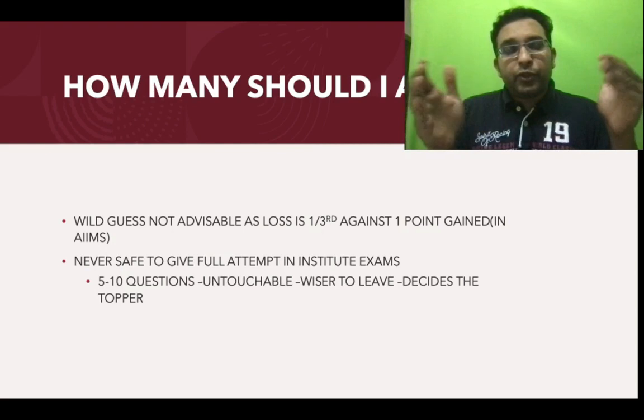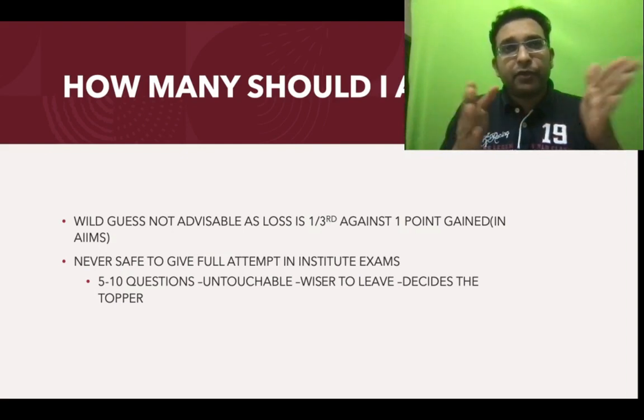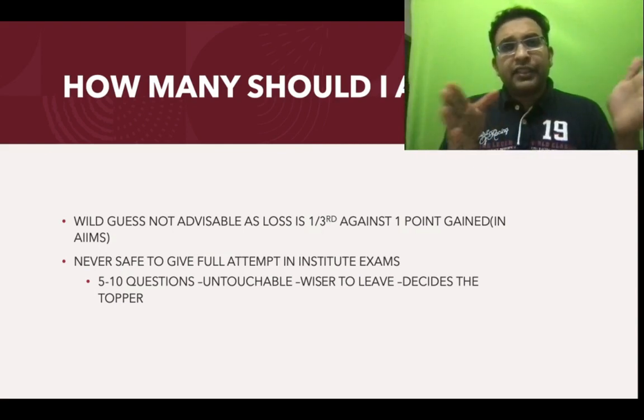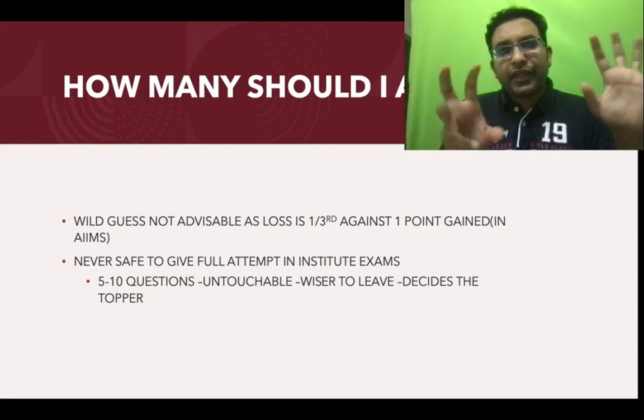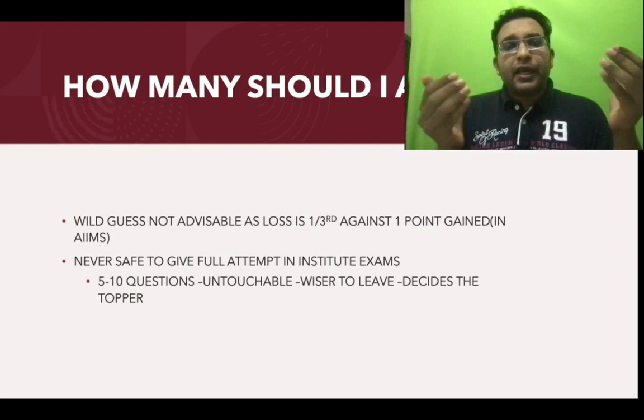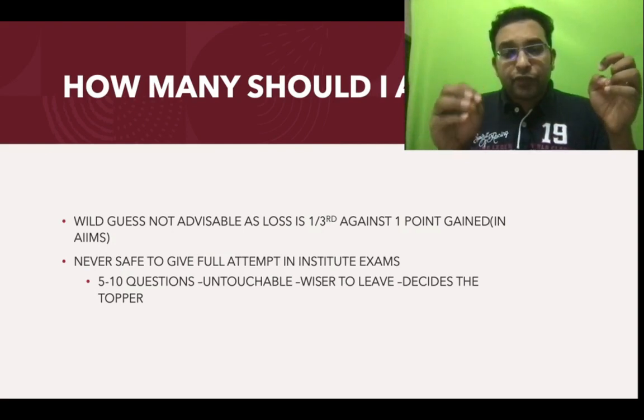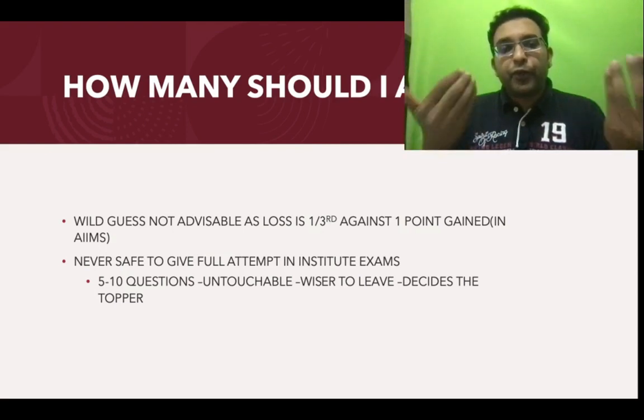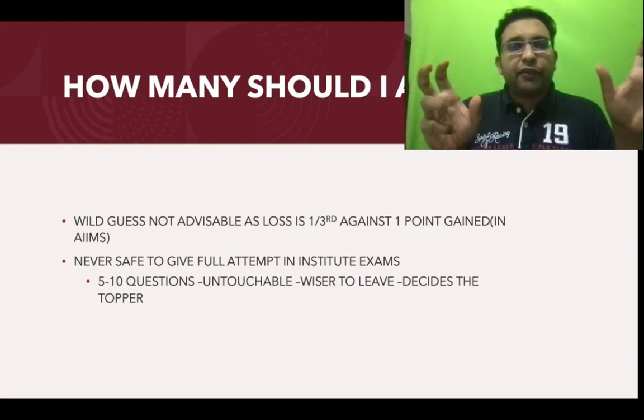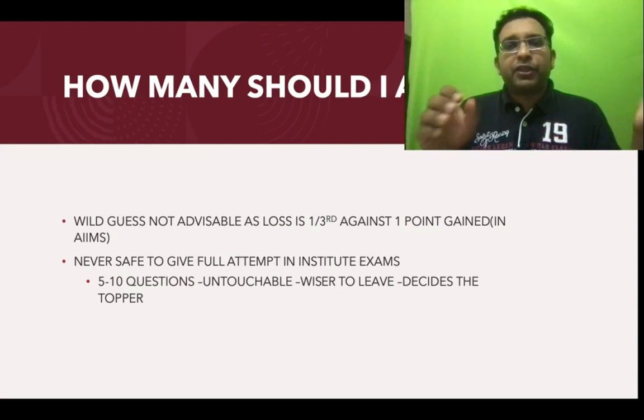You should see the previous topper marks. In NIMHANS, topper marks range from 65 to 75, last time was 80 or 81. In AIIMS it was 66 to 75 including practical marks. Maximum attempts should range between 65 to 70. You have to make a thorough decision and pre-planned attempt. It depends on the toughness of the question. Roughly it would be 70 to 75 maximum and could reduce based on toughness.